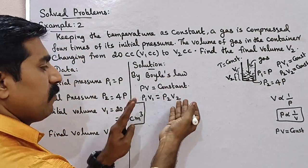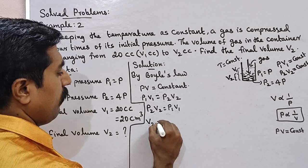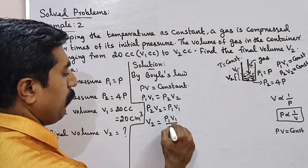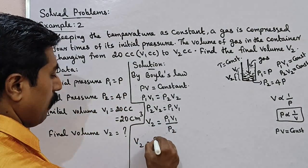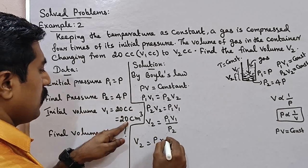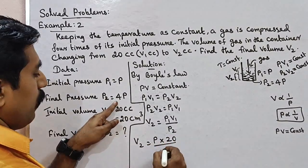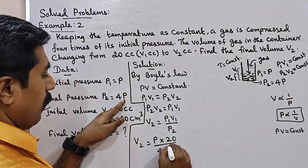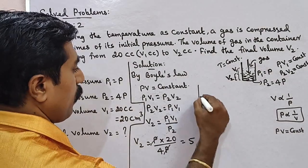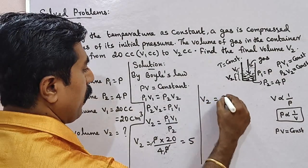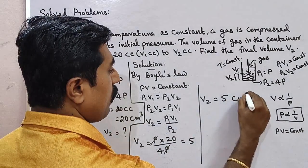So here we calculate V2. P2V2 is equal to P1V1, therefore V2 is equal to P1V1 divided by P2. Substituting: V2 equals P1 times 20 cm³ divided by 4P1, which equals 20 divided by 4, which equals 5. Therefore, the final volume V2 is equal to 5 cm³.